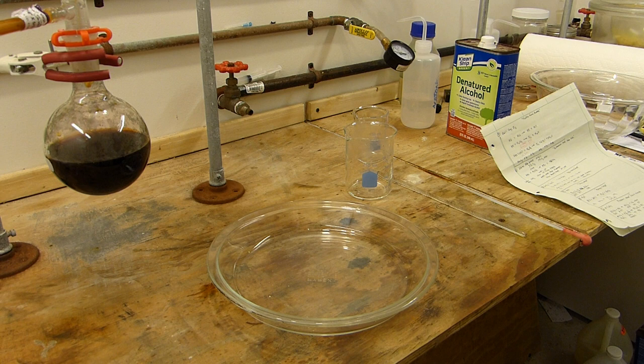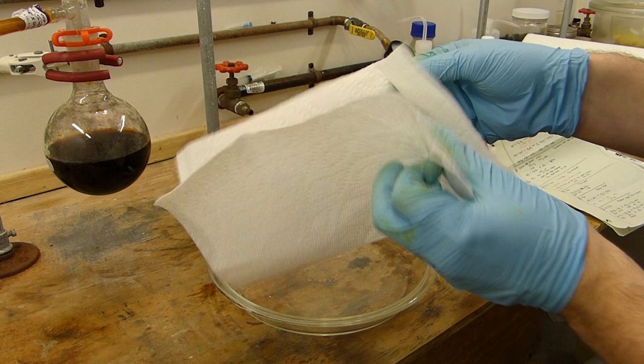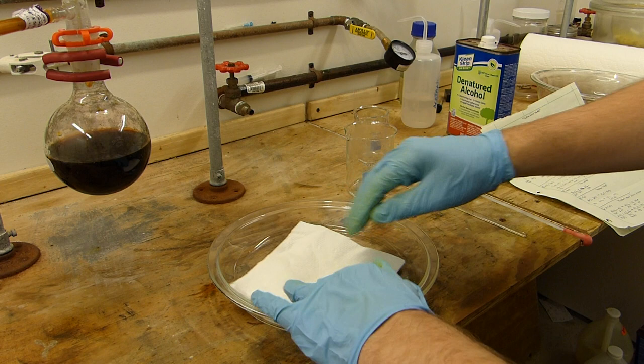While I continue to pull a vacuum on that we'll set up a small drying pad. I've done this in previous videos but I guess I'll show you some specifics. It's just some paper towels. Fold it in fours.